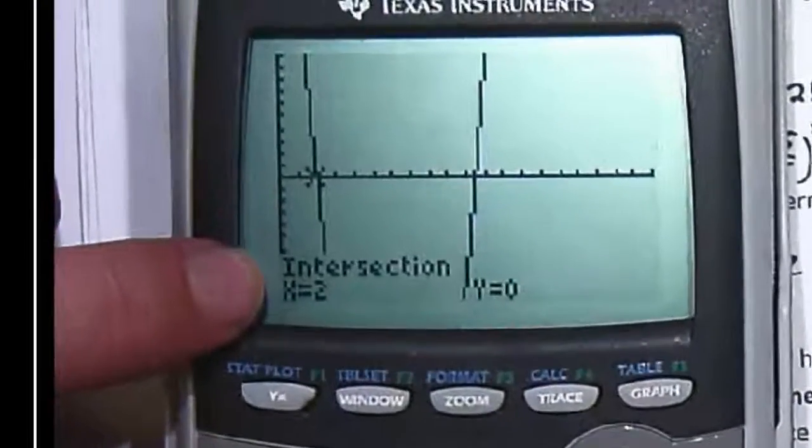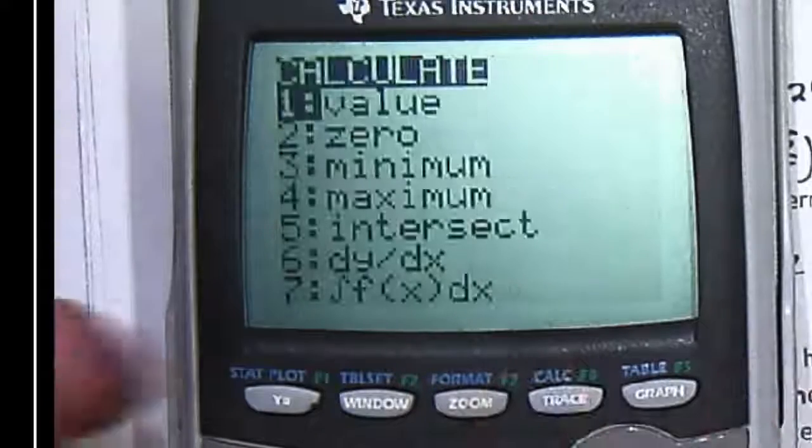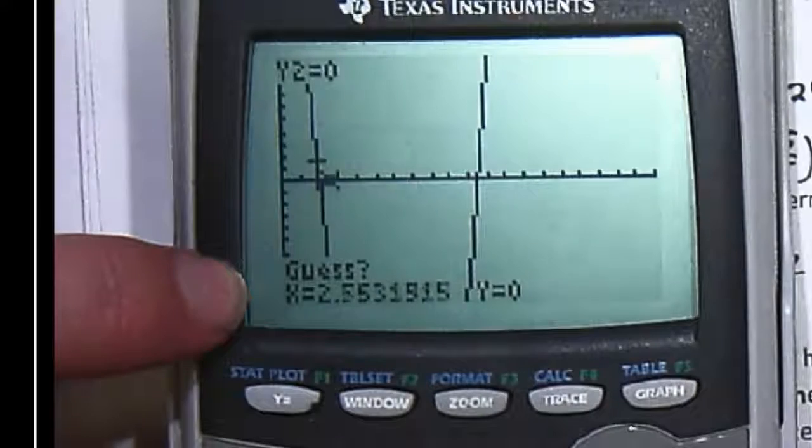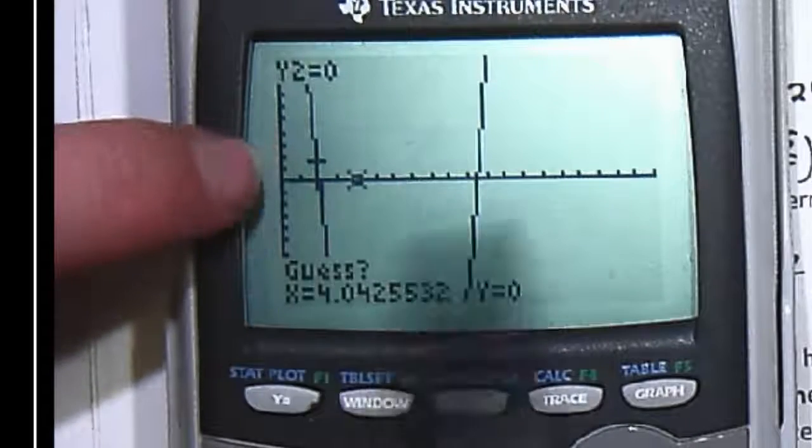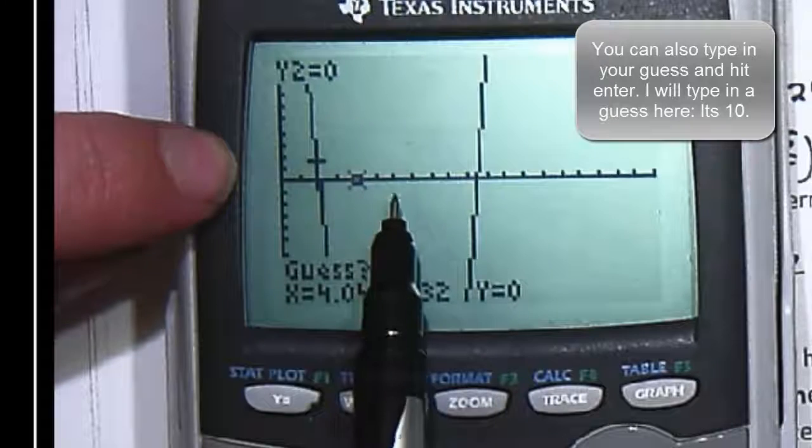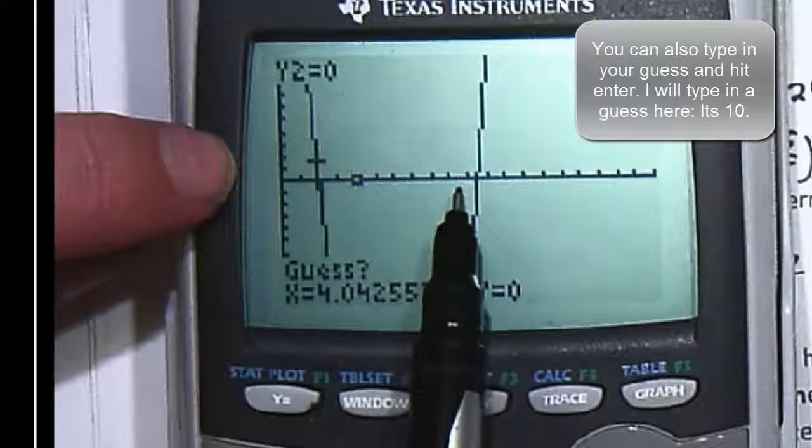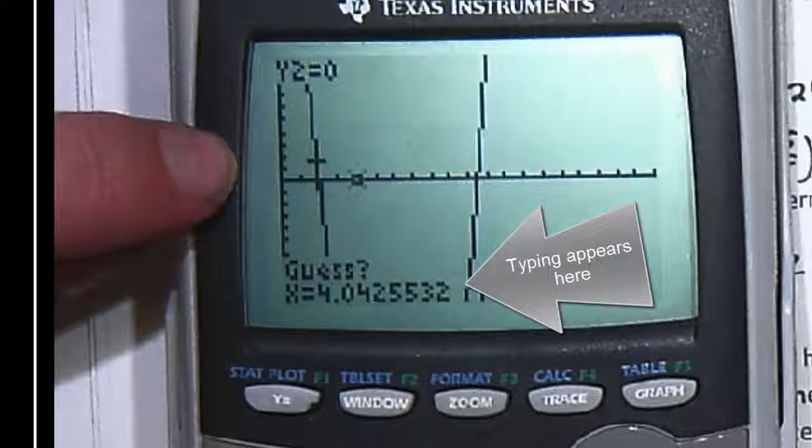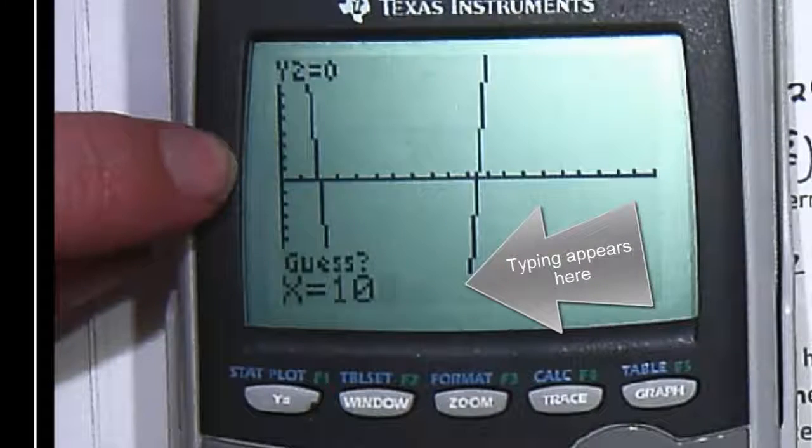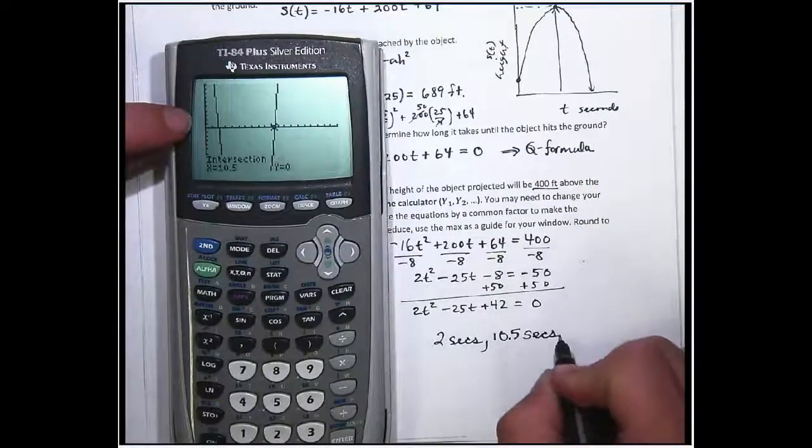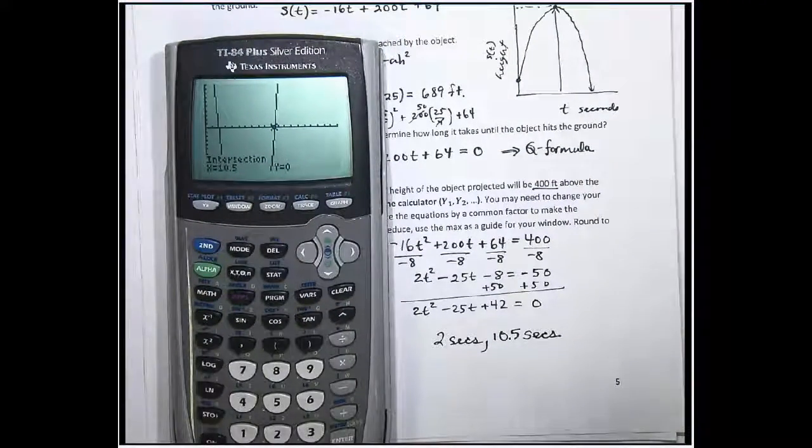And the other answer, I've got to go second calc number five enter enter. And now to get my guess, instead of moving over I'm going to go 1, 2, 3, 4, 5, 6, 7, 8, 9, 10. Alright, ten seconds, that's my guess. There it is at ten and a half. So those are the two answers.